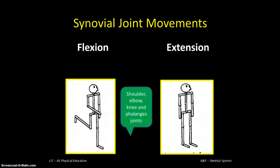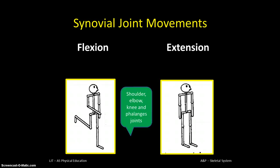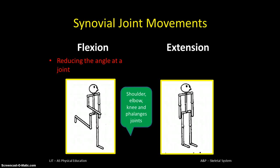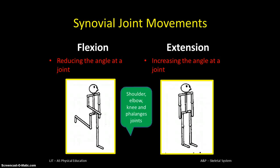So let's get going. Flexion and extension — I imagine you've all heard about these and may use the words bending and straightening in place of them. What you need to know is which joints these movements occur at. You can see in the green bubble that they occur at the shoulder joint, the elbow joint, and the knee — hinge joints and ball and socket joints. The correct definition of flexion is reducing the angle of the joint, as in doing a bicep curl you make a smaller angle at your elbow joint. Extension is increasing the angle at a joint. A lot of movements occur in pairs — flexion and extension.